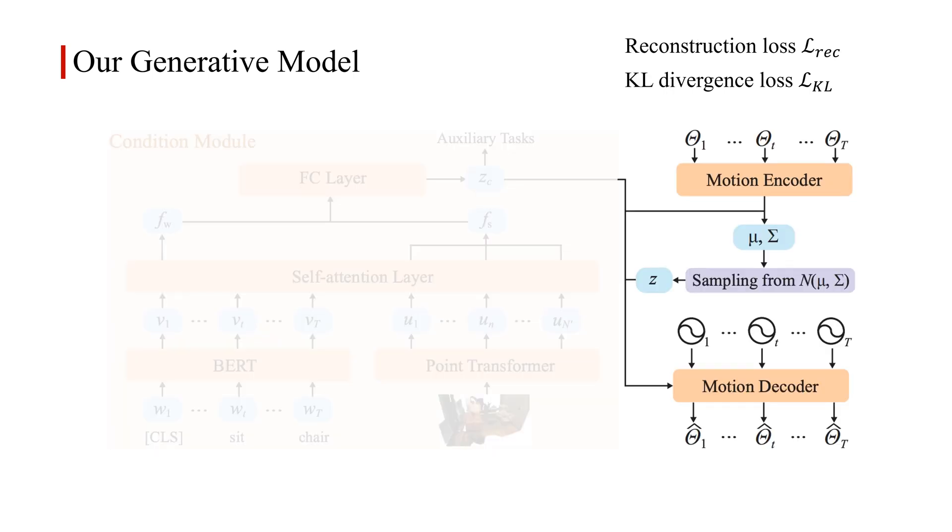For the motion encoder, we use a bidirectional GRU to obtain a sequence-level feature of the input motion. Next, we predict the Gaussian distribution parameters from the concatenation of the sequence-level feature and conditional latent embedding. We then sample a latent vector from the predicted distribution using the reparameterization trick.